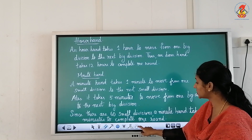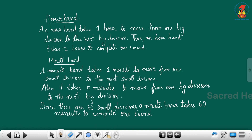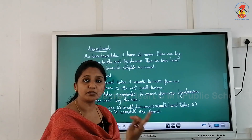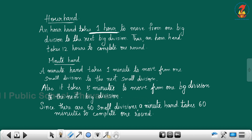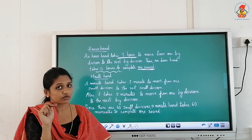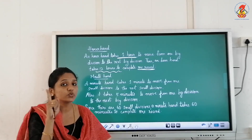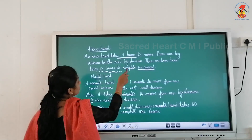The hour hand takes one hour to move from one big division to the next big division. How many hours are needed to move one big division? One hour. The hour hand takes twelve hours to complete one round. In a day there are twenty-four hours, so two rounds are needed to complete one day.